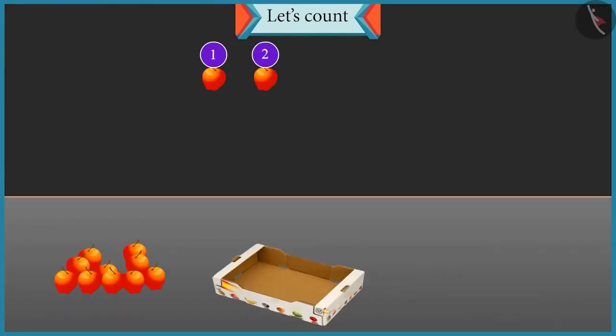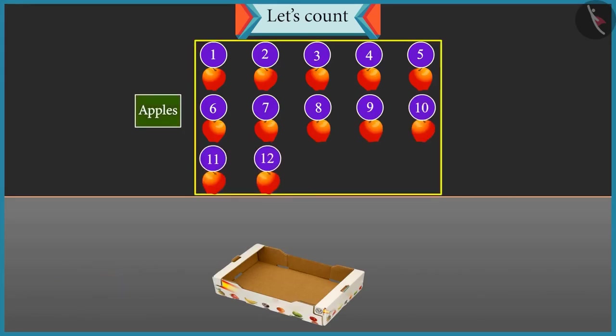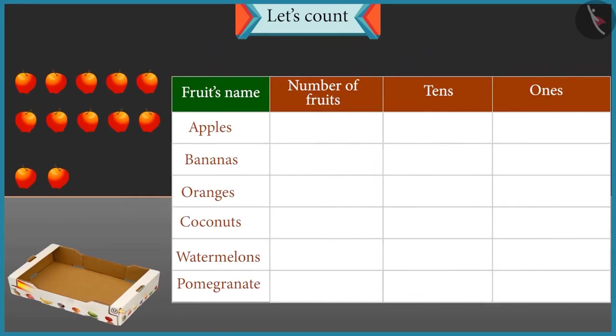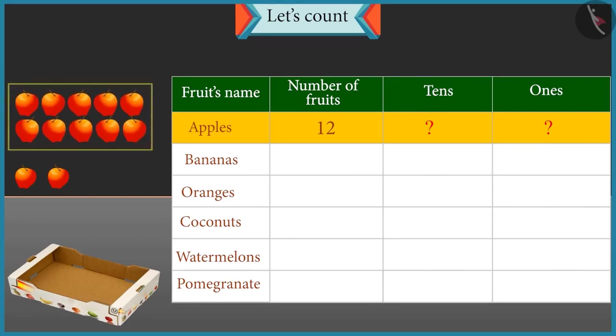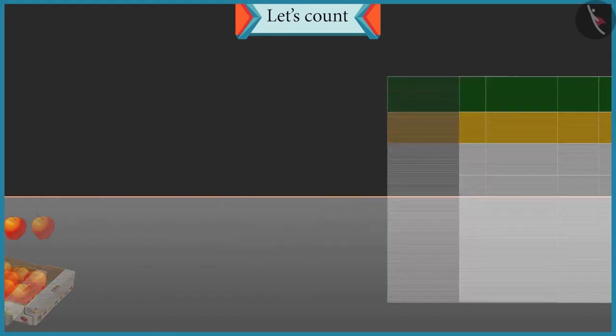1, 2, 3, 4, 5, 6, 7, 8, 9, 10, 11 and 12. There are 12 apples. Well done. Now tell me how many tens and ones are there in 12? One group of 10 will be formed and 2 apples will be left. So there is 1 tens and 2 ones. Well done.